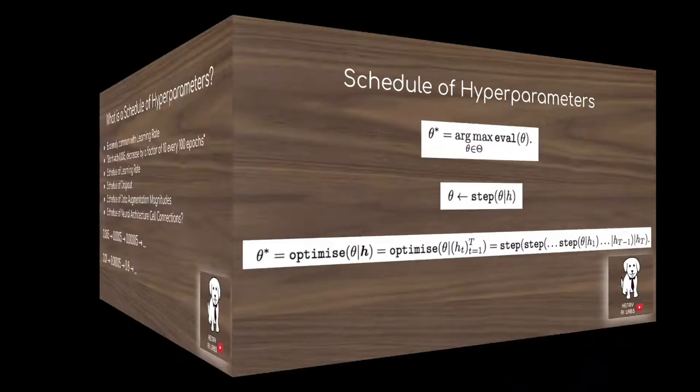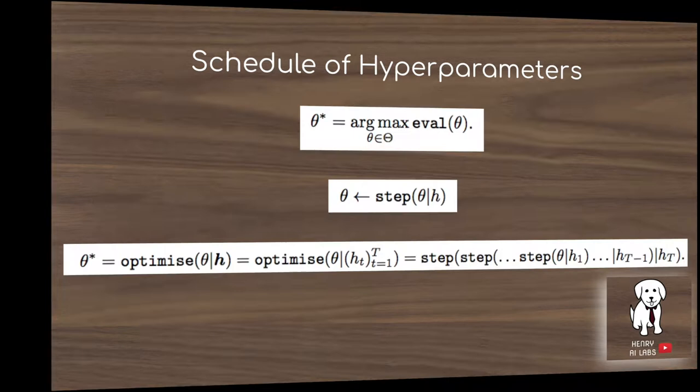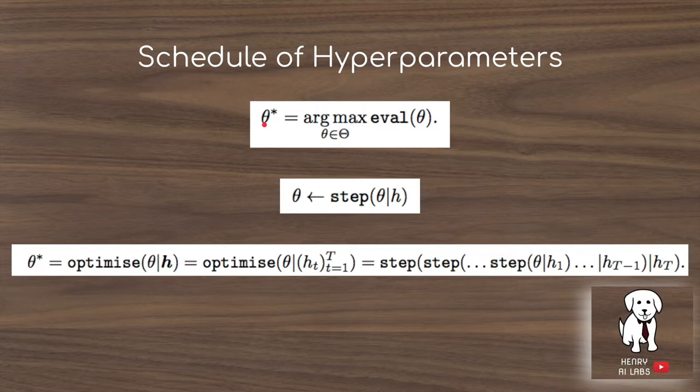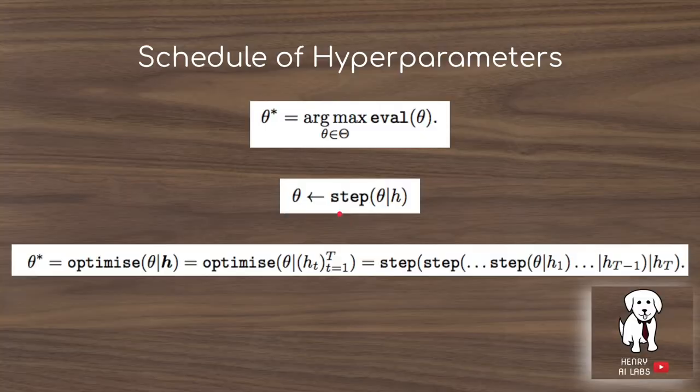Here's what's meant by a schedule of hyperparameters. You're trying to find the best set of parameters theta, and you do it by evaluating it on some task — improving theta by iteratively stepping it with gradient descent given these hyperparameters. Usually you optimize the parameters with the same exact hyperparameters throughout: h1 would equal h2 would equal ht. But in this algorithm, we're going to step with h1 and then change the hyperparameters, so h10 would be a different hyperparameter set for the gradient step that updates the parameters.